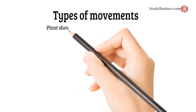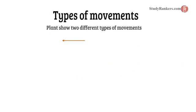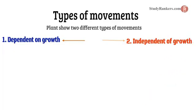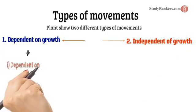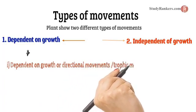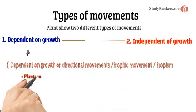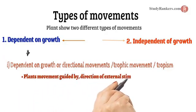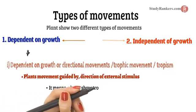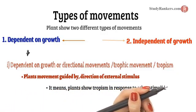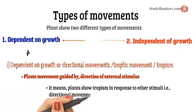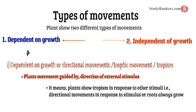Now we are going to learn about the types of movements. Plants show two different types of movement: first, dependent on growth, and second, independent of growth. Dependent on growth, or directional movement, is also called trophic movement — movement guided by the direction of an external stimulus. Plants show tropism in response to stimuli, for example, roots always grow downwards while shoots usually grow upward and away from the earth.